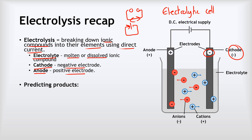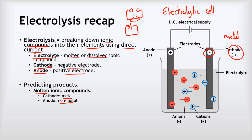In terms of predicting the products of electrolysis, with molten ionic compounds it's really straightforward. Always at the cathode we will see a metal being formed, and at the anode we will see a non-metal being formed.